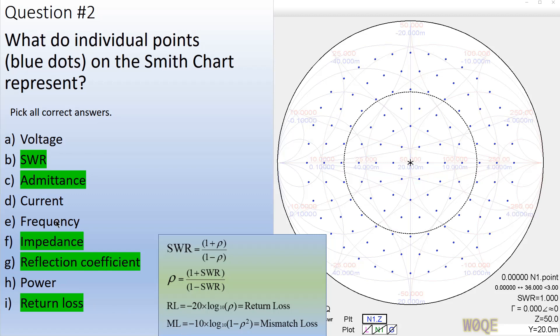Sometimes you might think frequency is a point on the Smith Chart, but what it represents is an impedance that may occur at a certain frequency. So if you use SimSmith to give you a sweep over a frequency range, each point on the Smith Chart will be at a different frequency, but there will be impedances that occurred at that frequency.